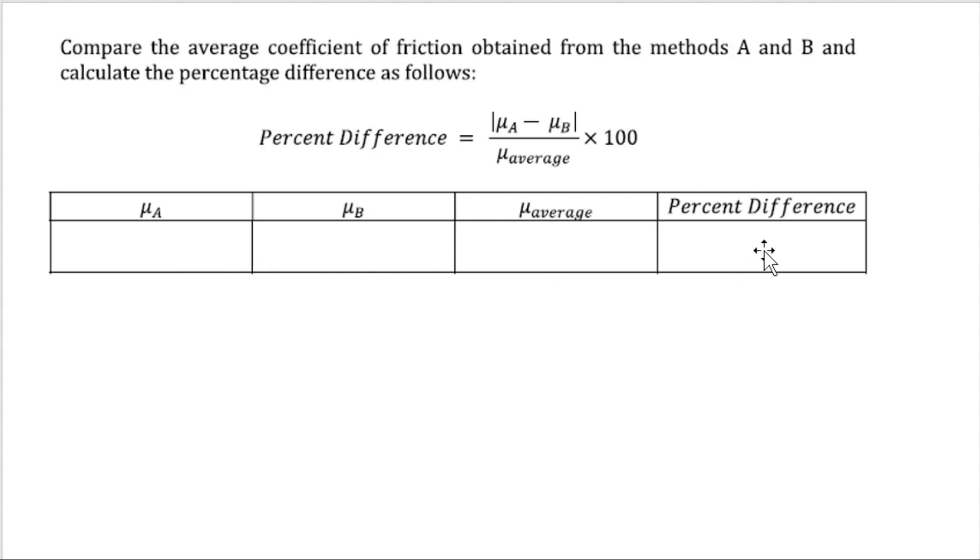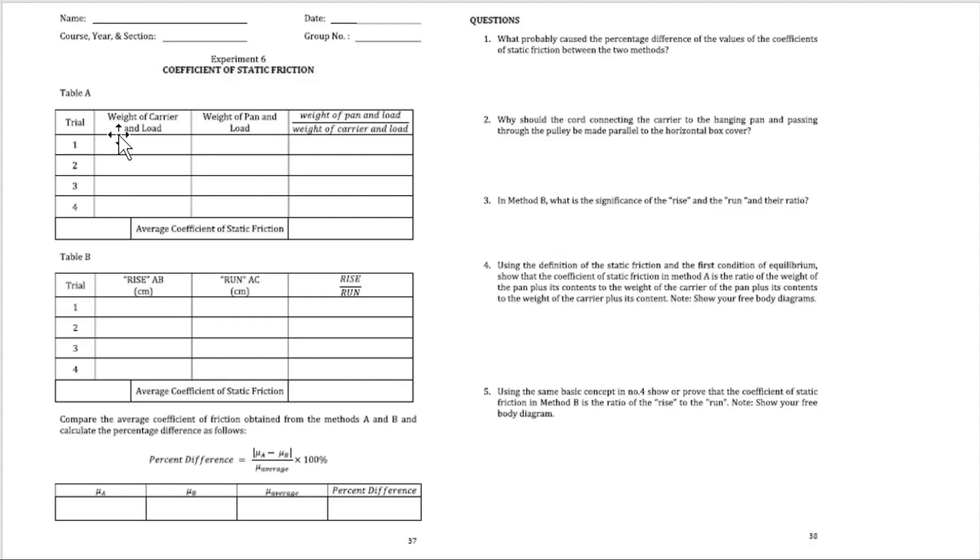Then we will also get the percentage difference. For the percentage difference, we will get the difference of the 2 values of our coefficient of static friction. Make it positive because the sign here is absolute, means it's always positive. Then divide it to the average. Then multiply it to 100 to make it a percentage.